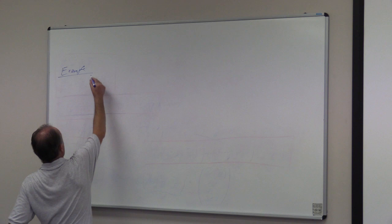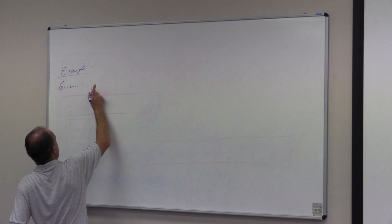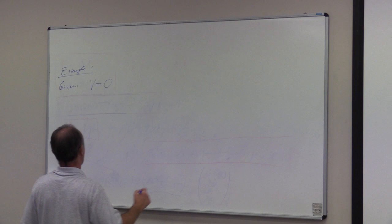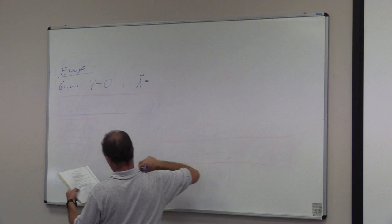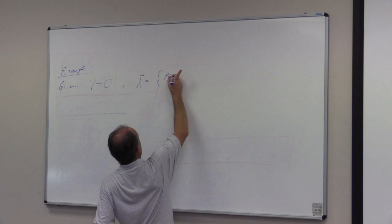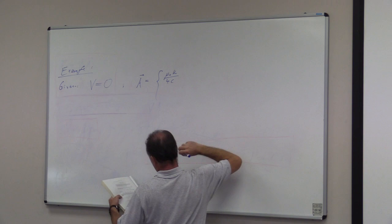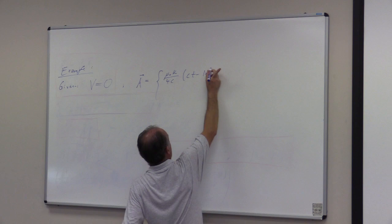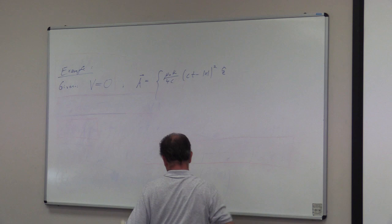So there, you're given the scalar potential that is zero everywhere and you can have some vector potential with a weird form that has mu naught k over 4c times (ct minus absolute value of x) squared.